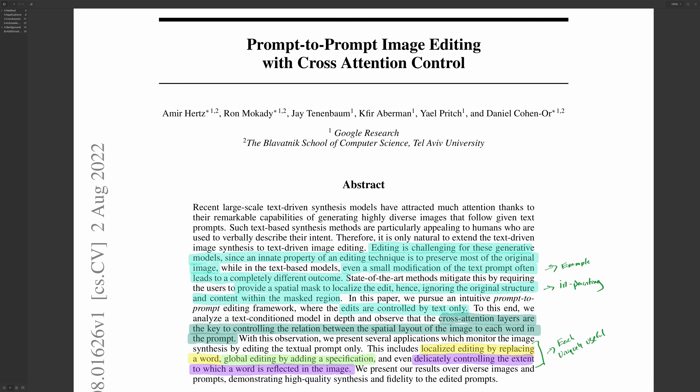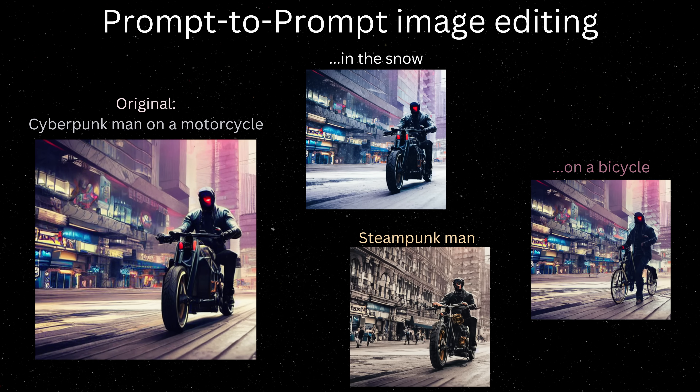A few months ago I covered Google's prompt-to-prompt research paper, which allowed you to make edits to a prompt and then subsequently make edits to the generated image. The problem was that this research required you to use AI generation for the initial image you were going to edit, and the prompt editing was very finicky. But what this research proved was that these networks can use attention to identify objects and regions in an image that pertain to tokens or words from the prompt, which led the way to where we are now.